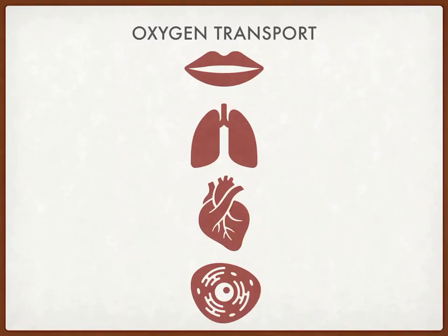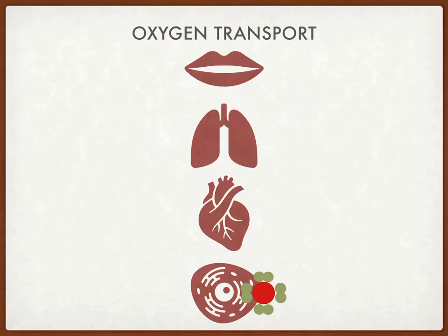From here, it goes to a cell somewhere in the body, and at this point, the partial pressure of oxygen is greater in the bloodstream than it is inside the cell.